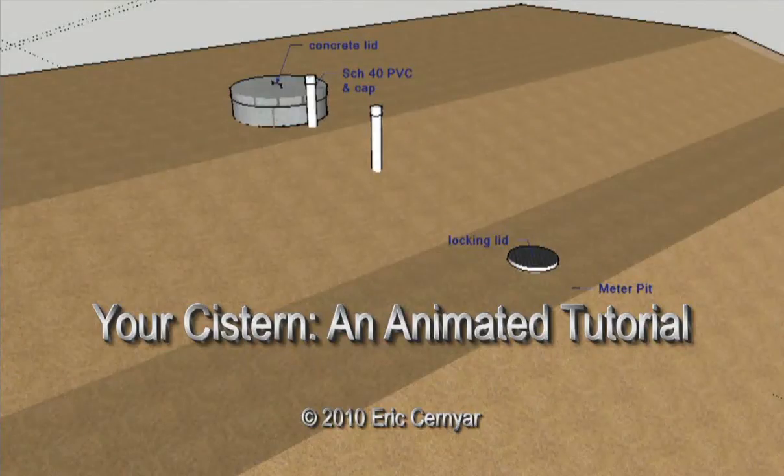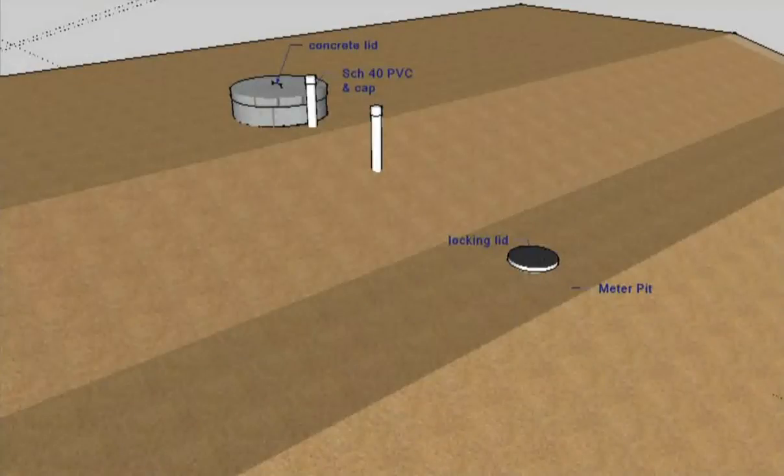If you are a Mountain Mutual customer, you probably have a cistern. If your setup is typical, this animation will show you how your cistern is connected to the water system.